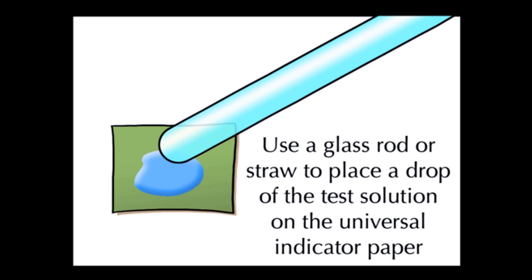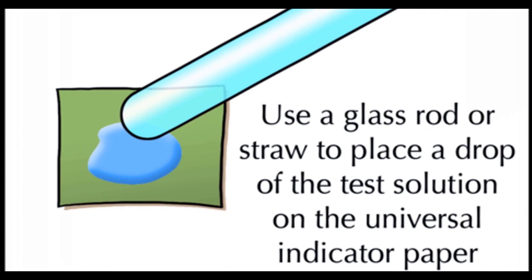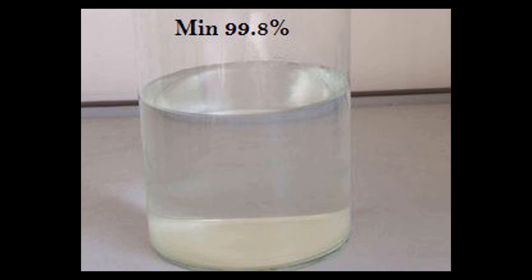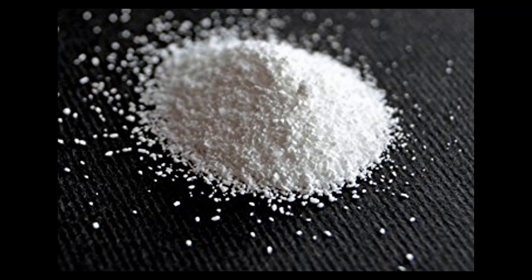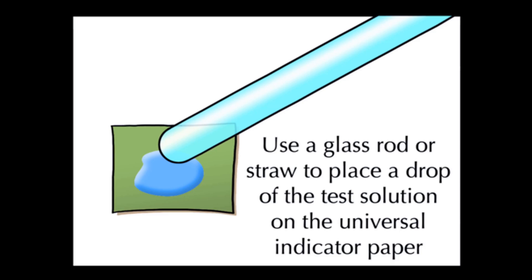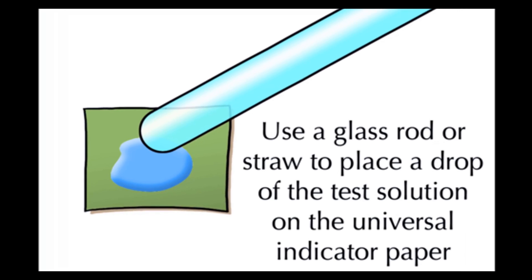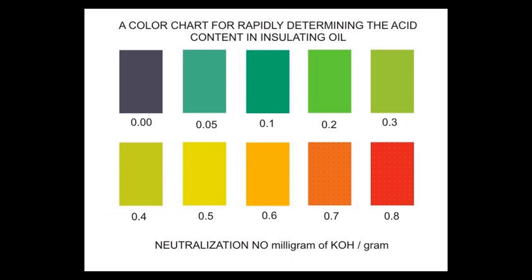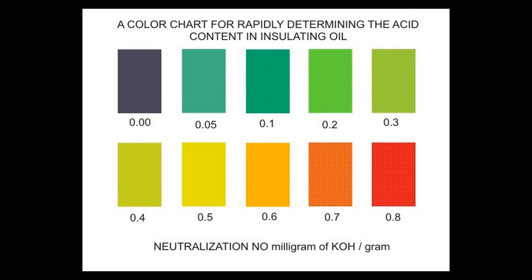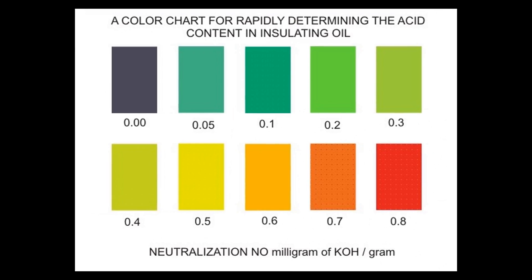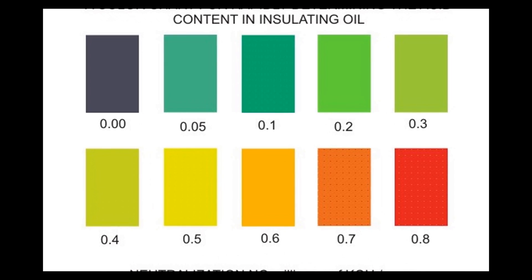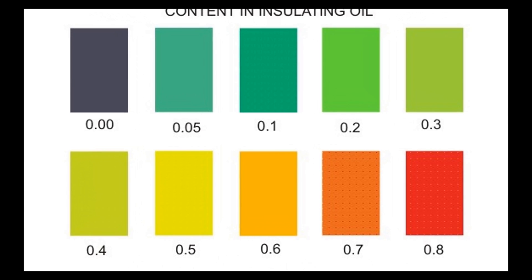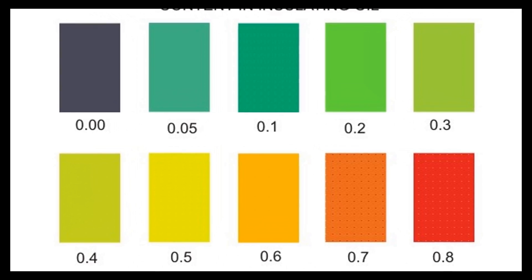At last, after reshaking the sample mixture, we add 5 drops of universal indicator to the sample. Observation: the color of the sample oil after mixing rectified spirit, sodium carbonate, and universal indicator describes the value of acidity of the oil sample in milligrams KOH per gram.